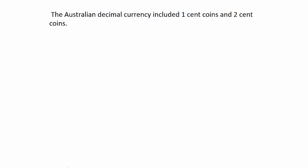Hi, many years ago in the Australian decimal currency system 1 cent and 2 cent coins were used. This is what the 1 cent coin looked like and the 2 cent. What we're going to do is look at some interesting number patterns using these two coins.